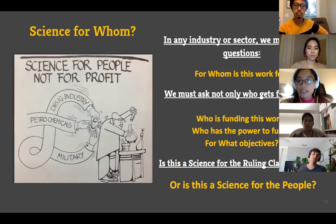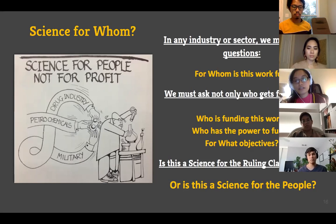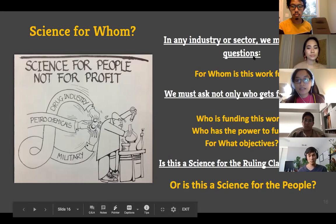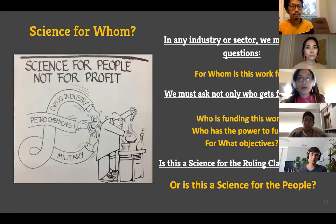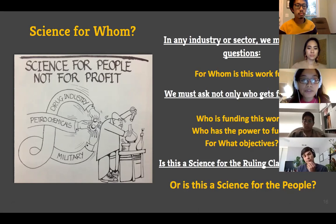We should always ask: science for whom? In any industry or sector we must ask — for whom is this work? We must not only ask who gets funding, not just whether Black or Filipino scientists can get funding, but who is funding this work, who has the power to fund, and for what objectives. Many of those who fund this work are the rich and the powerful. Do we want science to be for the ruling class, or do we want science to be for the people? Here's an image that says: science for people, not for profit.